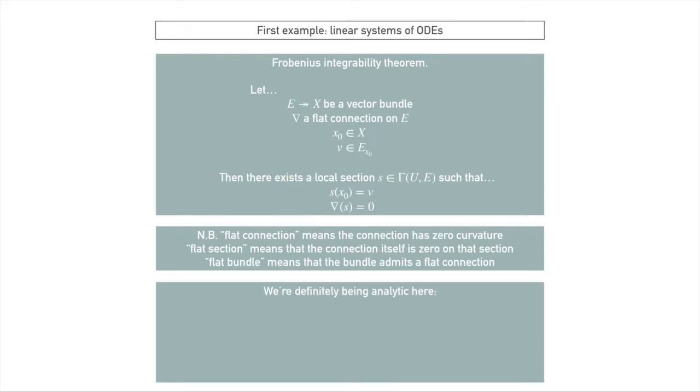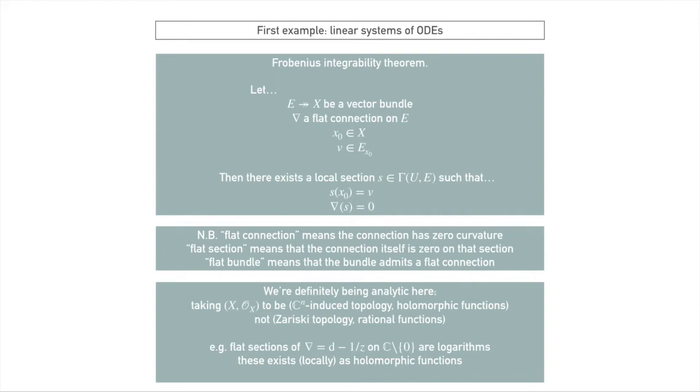One thing to note is that we're definitely being analytic here, not algebraic. What do I mean by that? I mean that we're looking at x as something living inside C^n, and we're looking at holomorphic functions on it. We're looking at the normal C^n subspace topology. The reason I mention this is because algebraic geometers love to study the Zariski topology and rational functions instead of holomorphic functions. And the point is that this theory does not—I mean there is a perfectly functioning theory of connections and curvature in the algebraic setting, but there are some very important differences. For example, flat sections of d minus 1/z on C* are logarithms, and these exist locally as holomorphic functions but they're not rational. So you see there are analytic sections but not algebraic ones. This really is a thing about ordinary differential equations. We're really doing analytic geometry here.